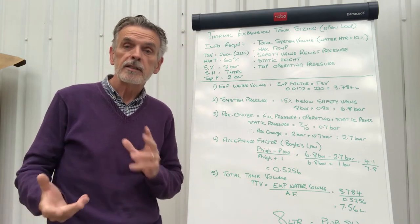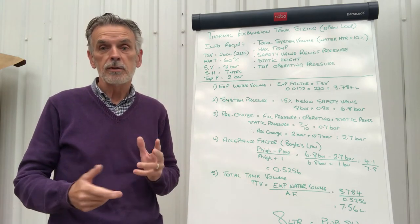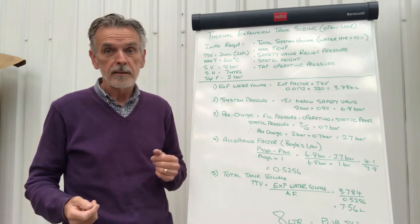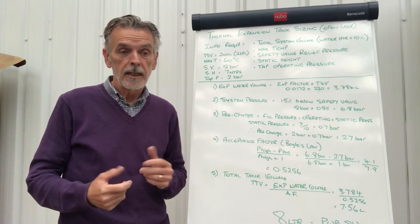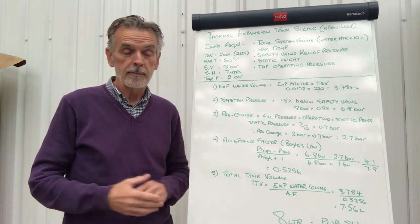Now this is the tank expansion vessel which goes next to the calorifier or the unvented cylinder, which is there to take up the expanded water, the thermal expansion of the water.